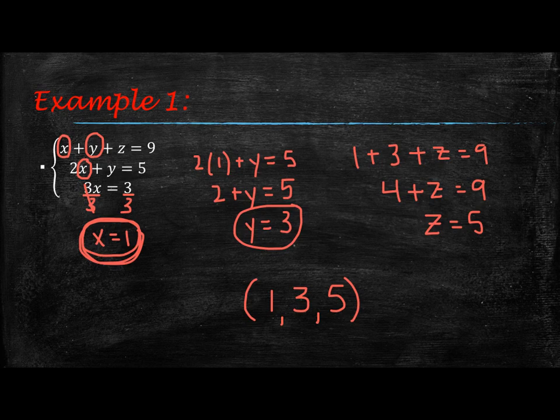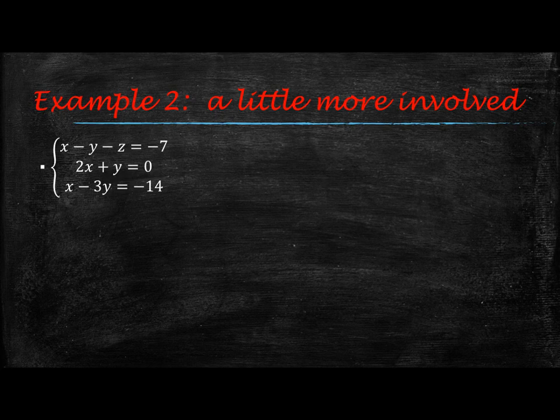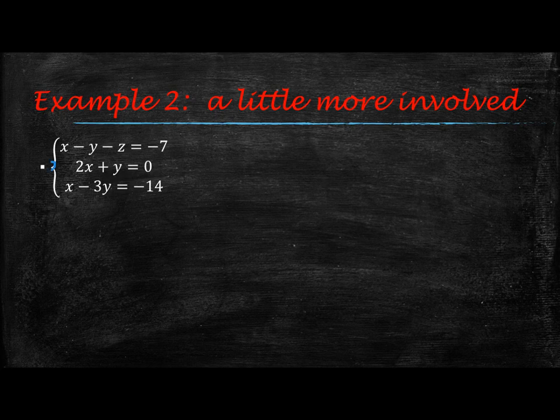And of course, we could plug those back into all of those equations to make sure that they work to check our answer. Here we have example 2, which is a little more involved. We have x minus y minus z equals negative 7, then 2x plus y equals 0, and x minus 3y equals negative 14. This is a little more involved because we don't have an equation that just has one variable. However, we do have equations 2 and 3 that are in two variables, so let's rewrite those.